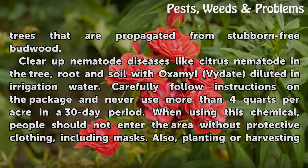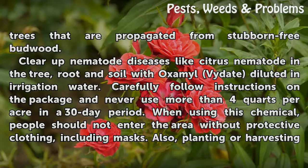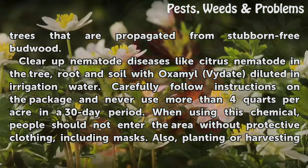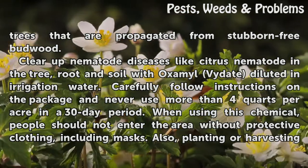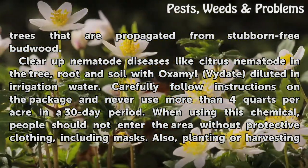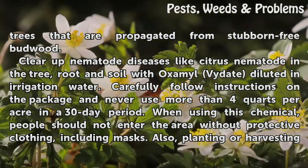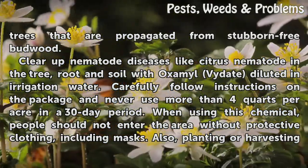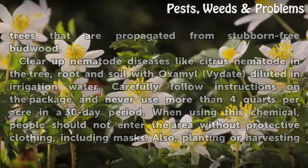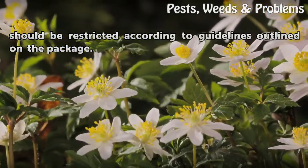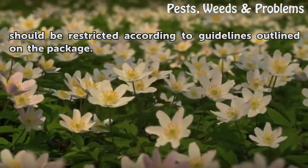Clear up nematode diseases like citrus nematode in the tree, root, and soil with Vydate diluted in irrigation water. Carefully follow instructions on the package and never use more than 4 quarts per acre in a 30-day period. When using this chemical, people should not enter the area without protective clothing, including masks. Planting or harvesting should be restricted according to guidelines outlined on the package.